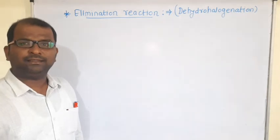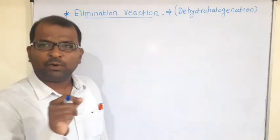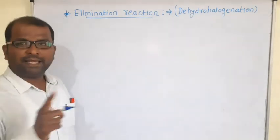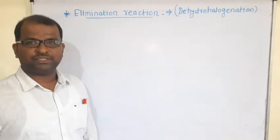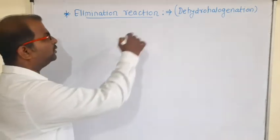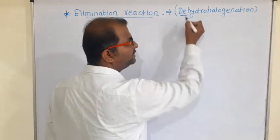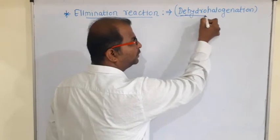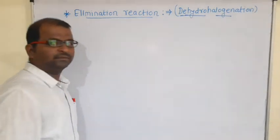In this reaction, halogen is removed as well as hydrogen is removed. That is called dehydrohalogenation reaction. 'De' means removal — so it is the removal of hydrogen and halogen.